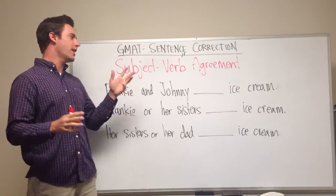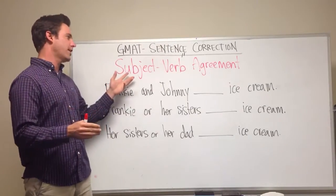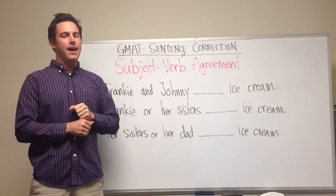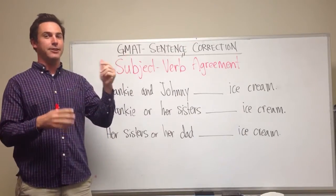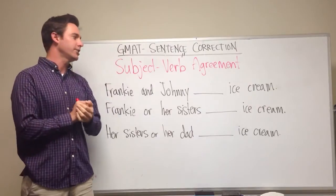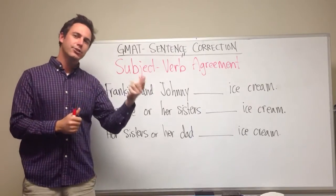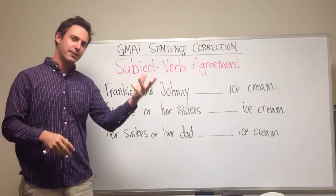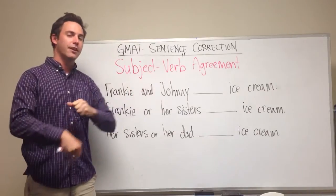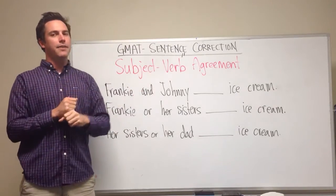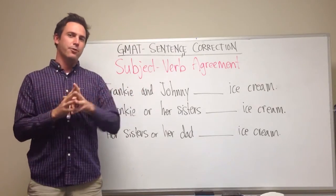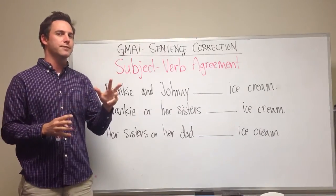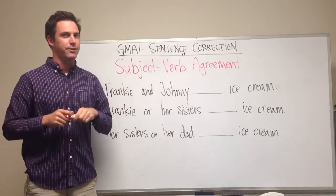So you should have a fairly good idea of what subject-verb agreement is. Subjects affect their verbs. In English, if you have a singular subject, you need to have a singular verb. If you have a plural subject, you need to have a plural verb. And this is pretty straightforward, but there's one particular rule that students tend to forget, and that's what we're going to go over today.